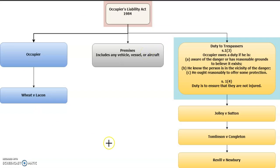This flowchart is designed to summarize the steps you need to go through if you're trying to determine whether your claimant is going to be successful under this Act of Parliament.